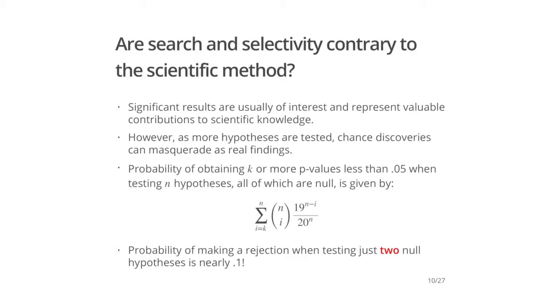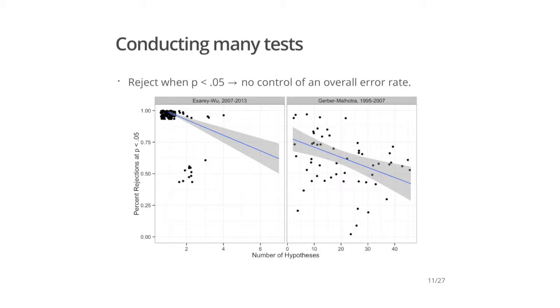So, are search and selectivity contrary to the scientific method? We believe significant results are a valuable contribution to scientific knowledge. But as more hypotheses are tested, there's a greater possibility that chance discoveries will masquerade as real findings. The probability of making a rejection when testing just two null hypotheses is almost double the nominal rate — almost 0.1. Data from 1995 to 2013, collected by Neal Malhotra, Justin Aceri, and collaborators, shows that the number of tests political scientists conduct is pretty high.